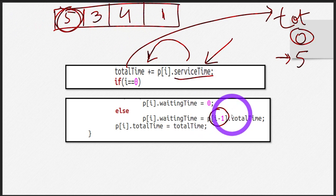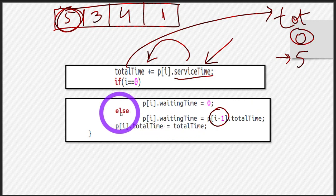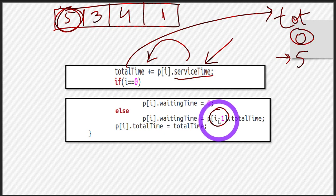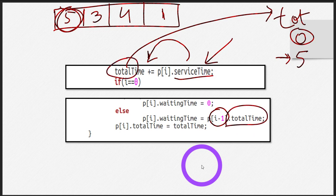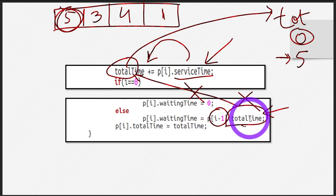This is my logic — just one way of doing it, there are many other approaches. I assigned the waiting time of any process other than the first equal to the total time of all its previous processes. Note that this total_time variable here is not the same as the member variable total_time inside the structure — they are two different variables.